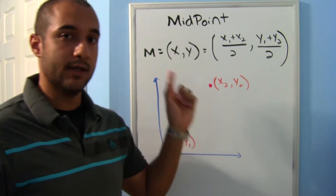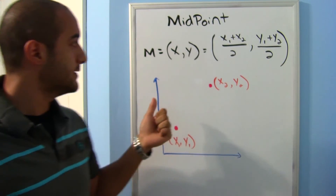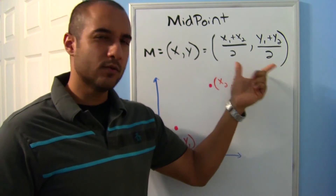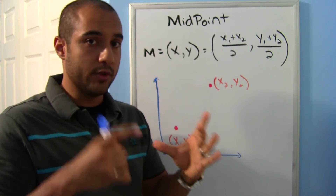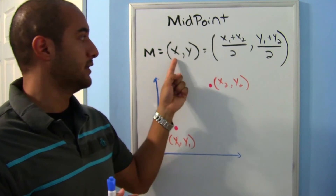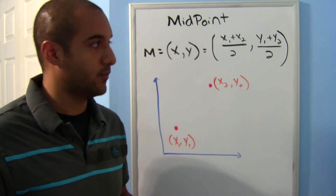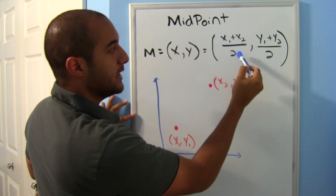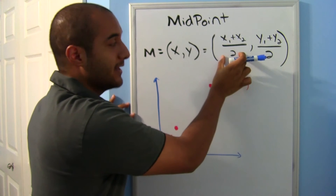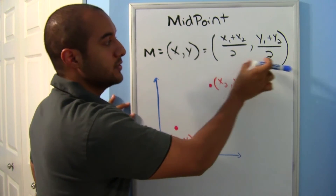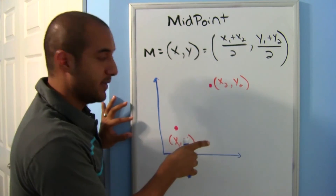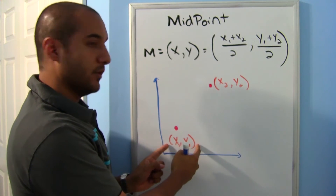Now we'll be looking at the midpoint formula. The midpoint is a coordinate point given by an ordered pair — you need both an x and a y. To get the new x, you take the average of the two x-values; to get the new y, you take the average of the two y-values.